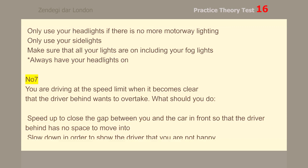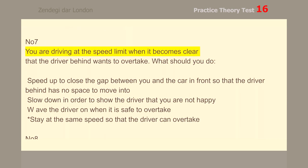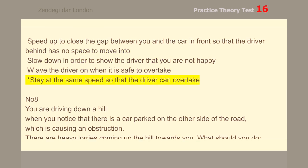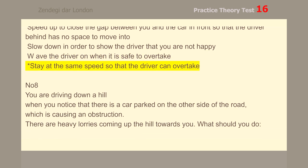Number 7. You are driving at the speed limit when it becomes clear that the driver behind wants to overtake. What should you do? Stay at the same speed so that the driver can overtake.